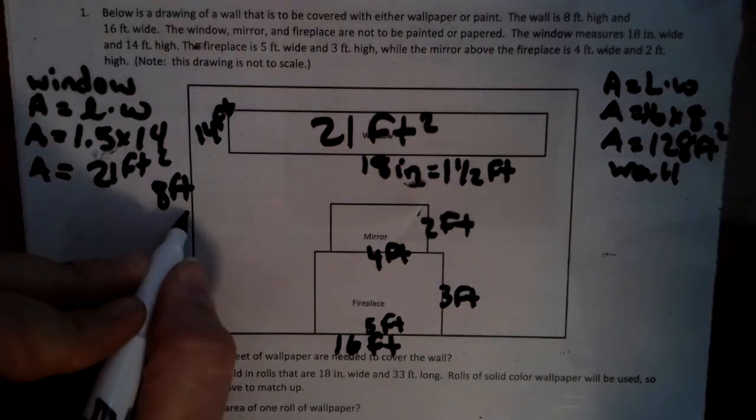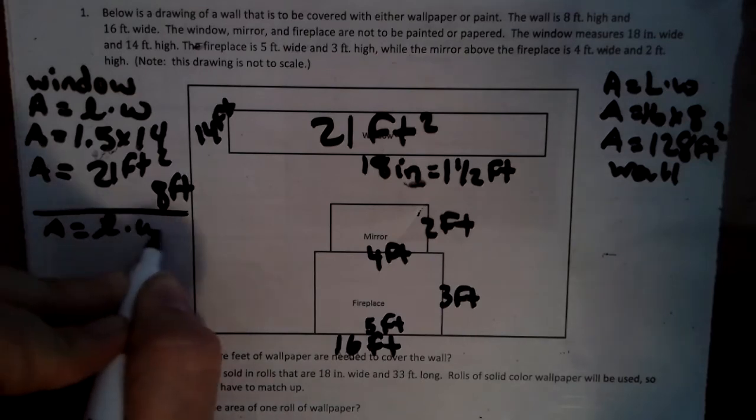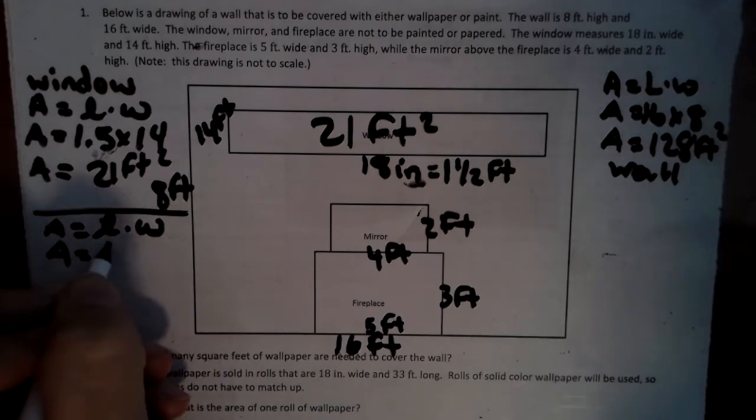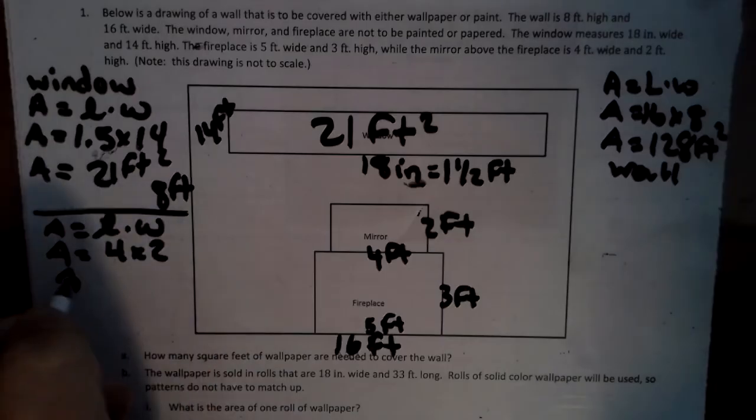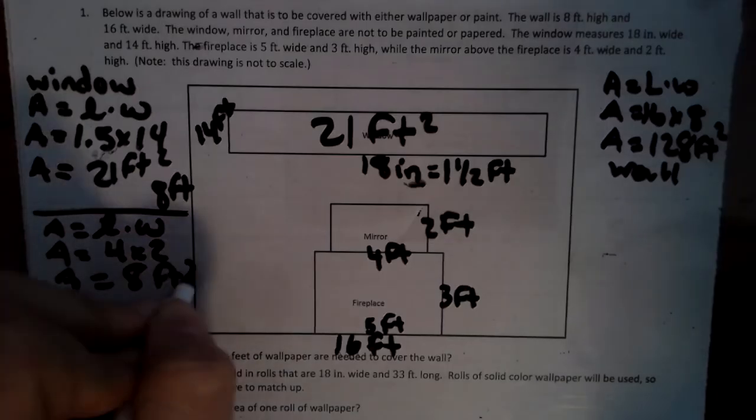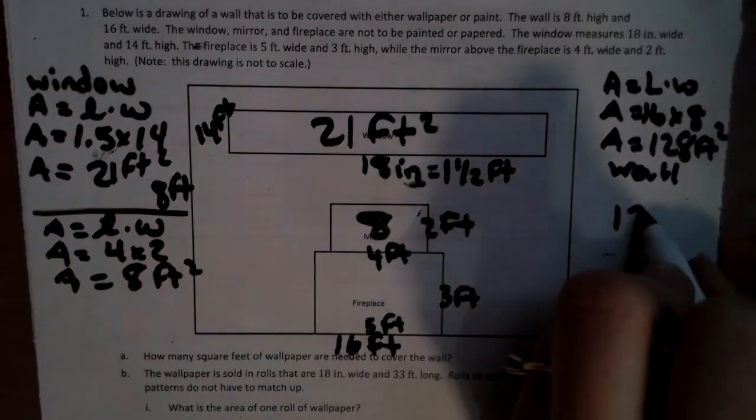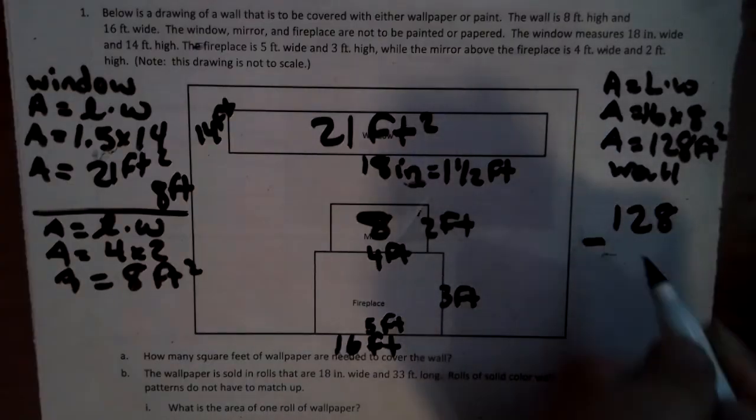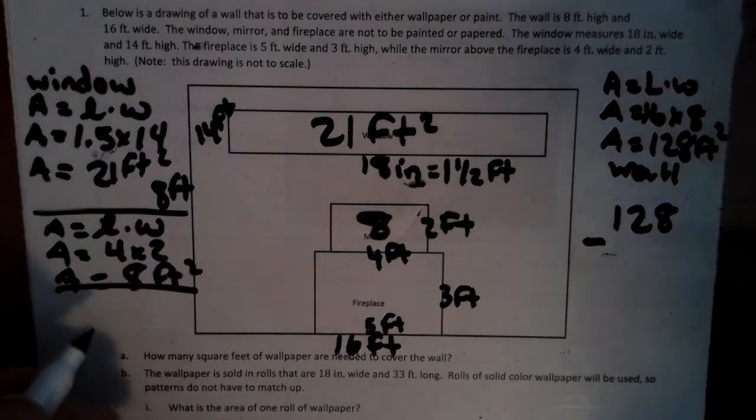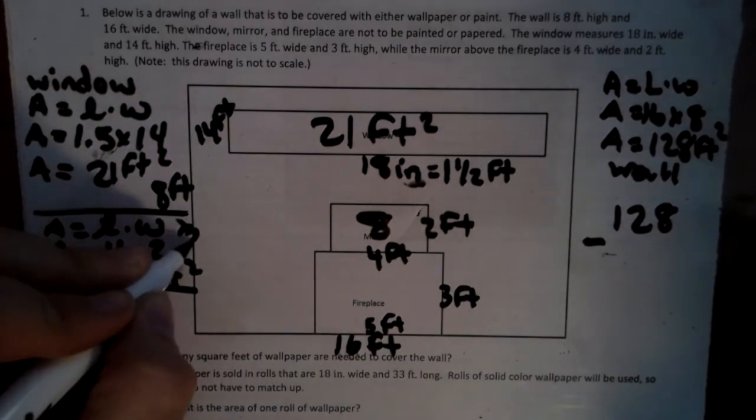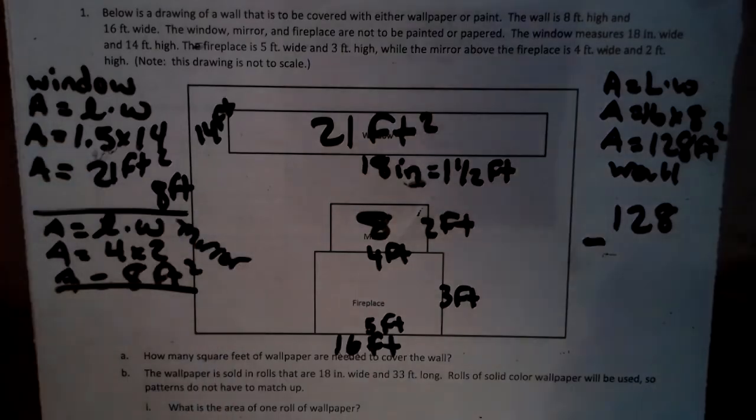So now this mirror is pretty easy, but we still got to show work. So area equals length times width. Area equals 4 times 2. Area equals 8 feet squared. So this is 8. So right now we have 128 being taken away, and we're going to have 21 and 8 so far. And this was mirror.